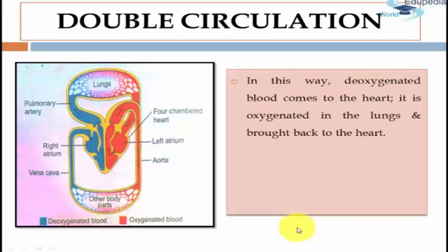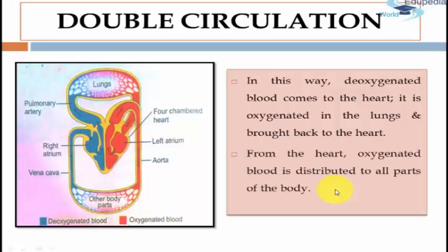In this way, the deoxygenated blood comes to the heart, it is oxygenated in the lungs, and brought back to the heart. There are thus two circulations in the human body. As the blood flows twice through the heart, it is called double circulation. From the heart, oxygenated blood is distributed to all parts of the body.